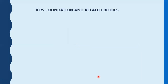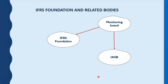The next thing we need to learn is the IFRS Foundation and related bodies. The IFRS Foundation is the main body to set high quality, understandable, and enforceable international financial reporting standards. It has related bodies, which we see in the next diagram. The first body is the Monitoring Board, which is the main body to regulate the IFRS Foundation and the IASB.